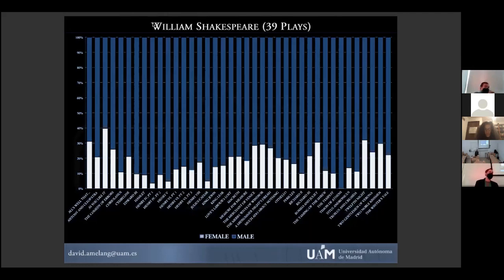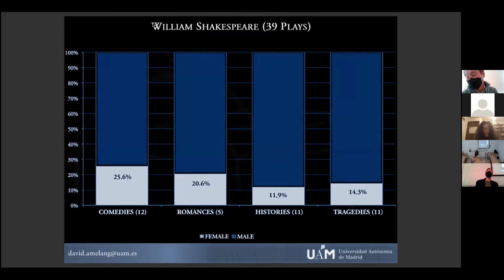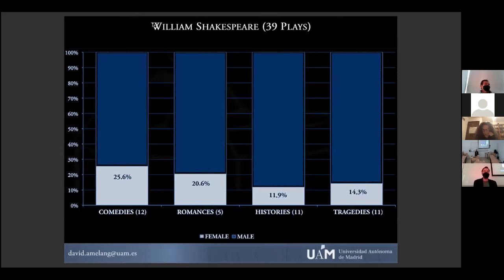Hay muchos altibajos y, por lo general, las obras con más habla femenina suelen ser comedias o tragicomedias, lo que en estudios shakespearianos también se llama romances. Eso tiene que ver con la correlación histórica que siempre ha existido desde los clásicos entre la comedia y el protagonismo femenino, en tanto que se le permitía ser protagonista a la mujer en ese tipo de historias. En las tragedias y las historias, que suelen ser narrativas militares, hay bastante poco protagonismo femenino. Por ejemplo, en Hamlet, solo un 9% de los versos son pronunciados por los dos personajes femeninos que hay: Gertrude y Ophelia.